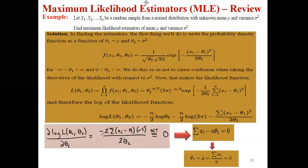Now we take the example with respect to normal distribution. In Poisson distribution we had one parameter, but normal distribution has two parameters — mu and sigma squared — so we need to calculate both. For simplicity, we label theta 1 for mu and theta 2 for sigma squared. This is the normal distribution function, where theta 2 represents variance and theta 1 represents the mean.